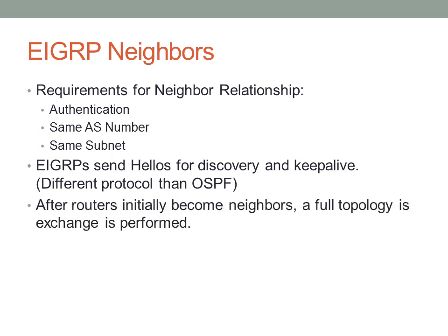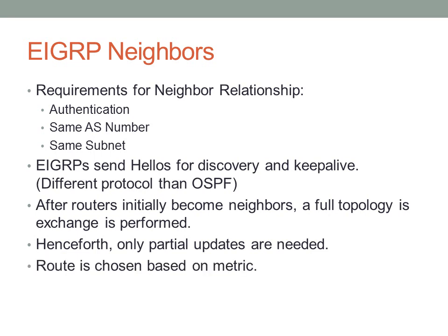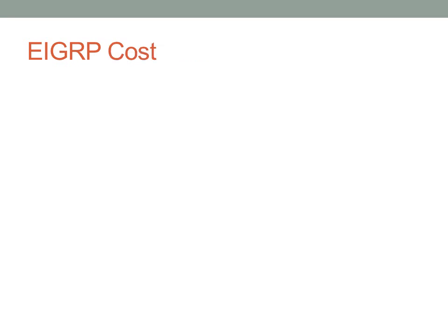After the routers become neighbors, a full topology exchange is performed. Once the routers exchange that information, only partial updates are needed going forward. You don't have to send a full link state database like you did with OSPF — it's only going to exchange the updates that are required. The route is chosen based on a simple metric, which we'll discuss shortly.